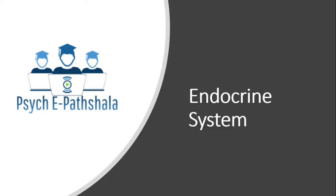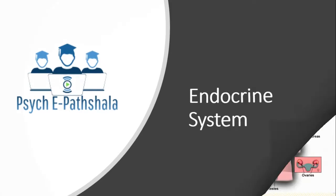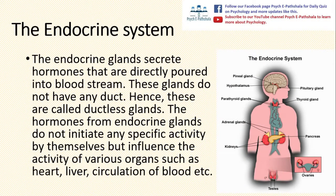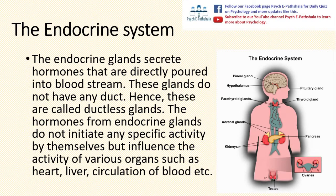In this video, we will be discussing the endocrine system. The endocrine system is made of the endocrine glands in our body. The endocrine glands secrete hormones that are directly poured into the bloodstream. These glands do not have any duct, hence they are called ductless glands.